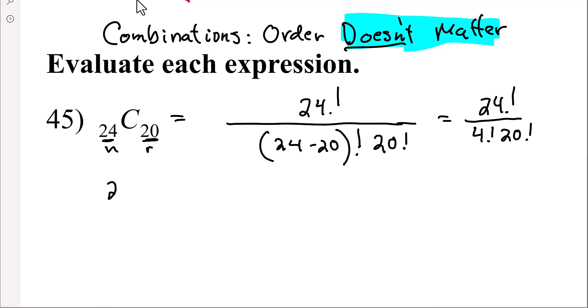Now we could take the time to expand all of that. 24 times 23 times 22 times 21 times 20, that would take too long. So what I'm going to do is have you expand until you get 20 factorial. So 24 times 23 times 22 times 21 times 20 factorial, and then go ahead and stop. Down here we know we're going to have a 20 factorial, but we also have this 4 factorial.